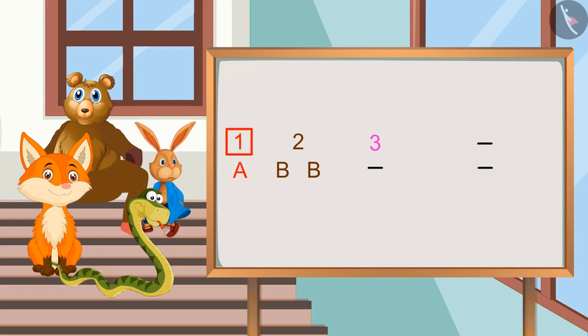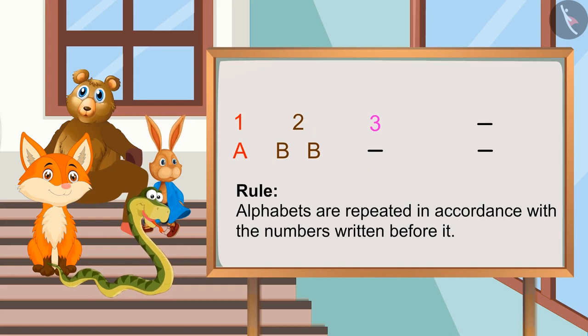First, we have the number 1, then alphabet A for once. Then we have number 2 and alphabet B is written twice. So, the rule for this is, alphabets are repeated in accordance with the numbers written before it. Absolutely right, Kamini.